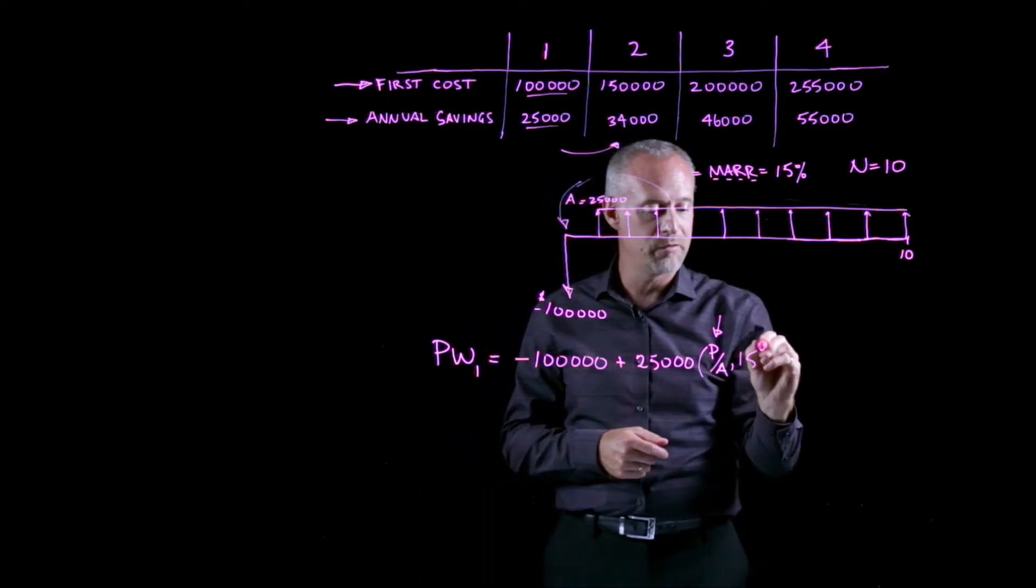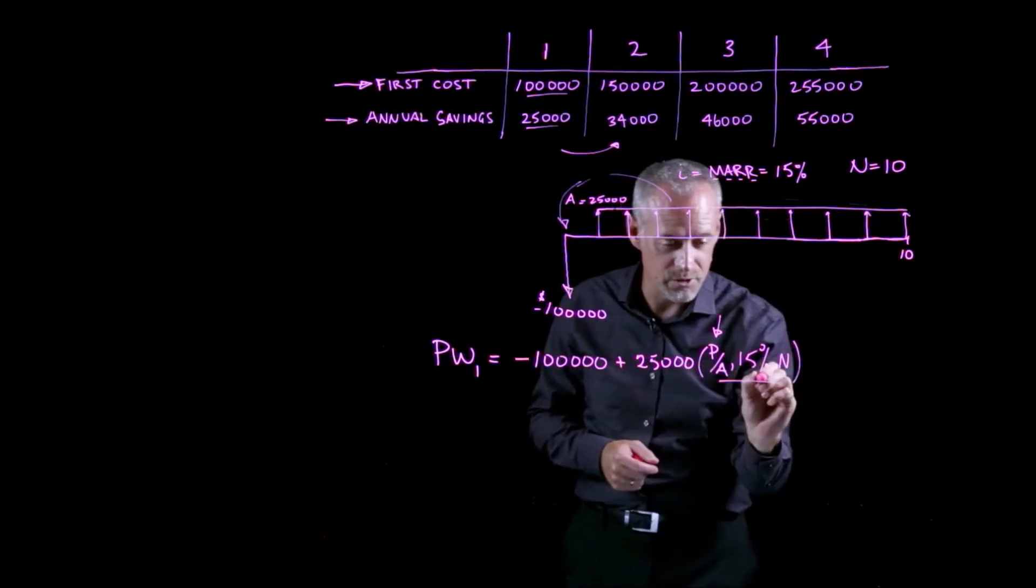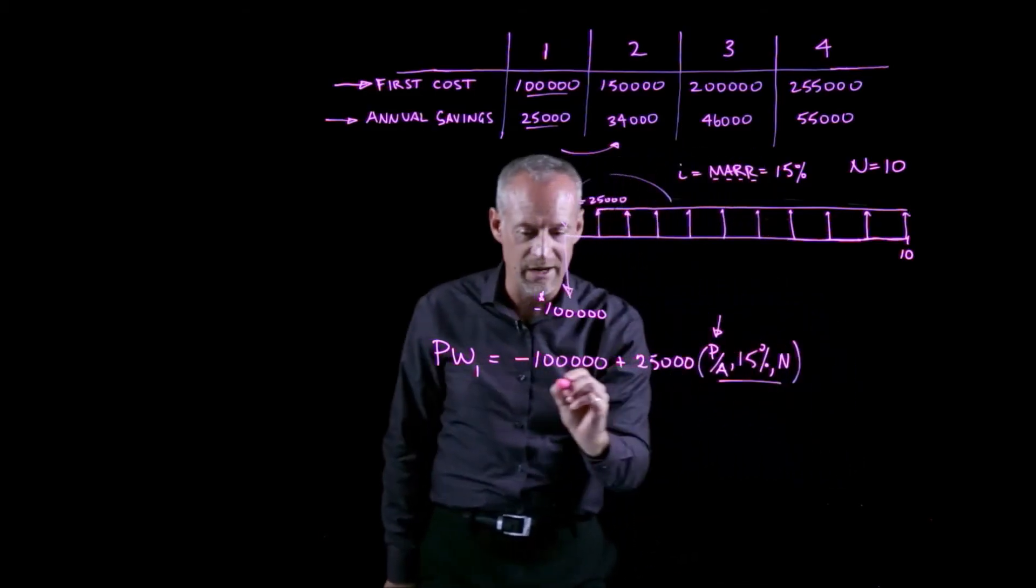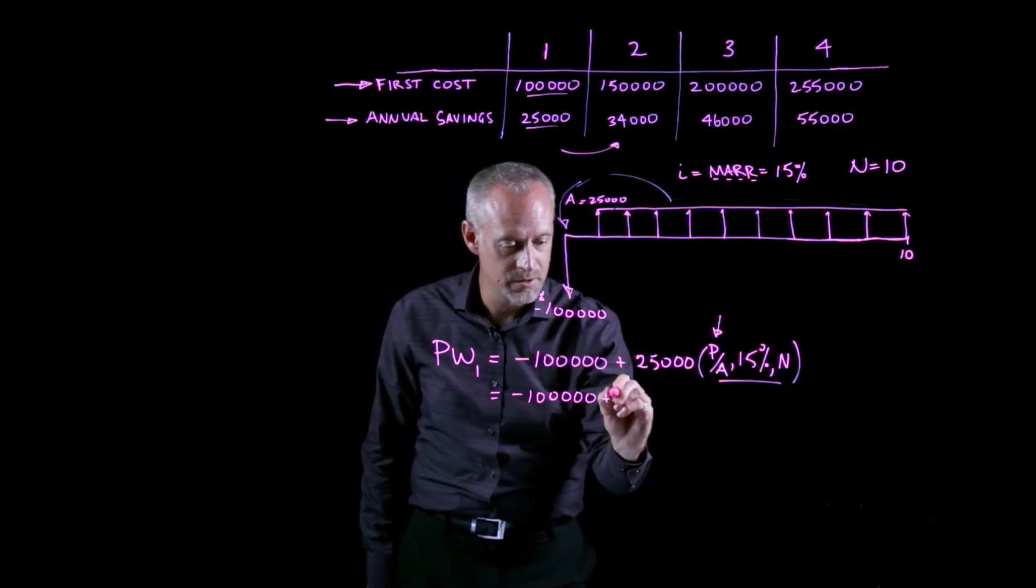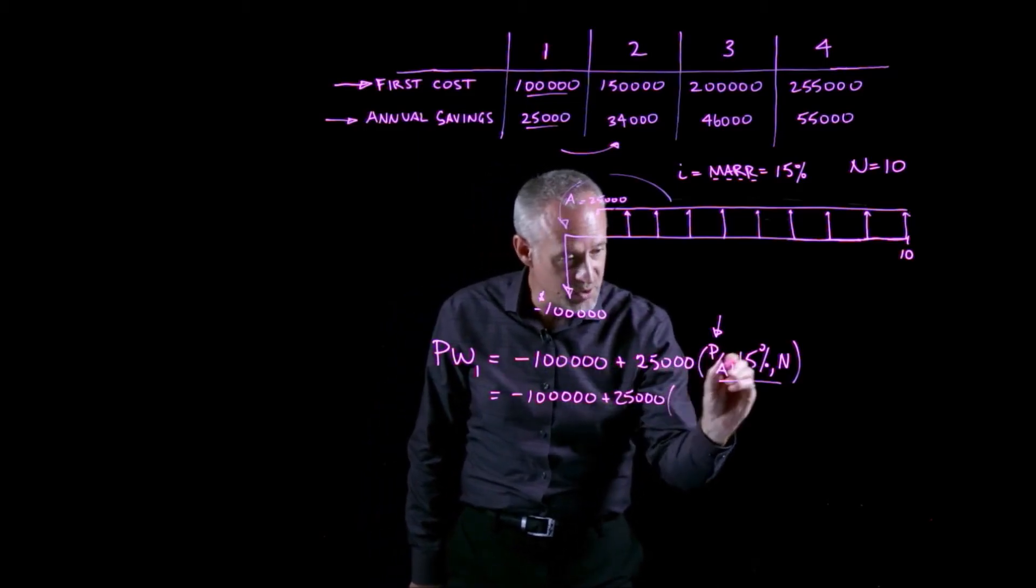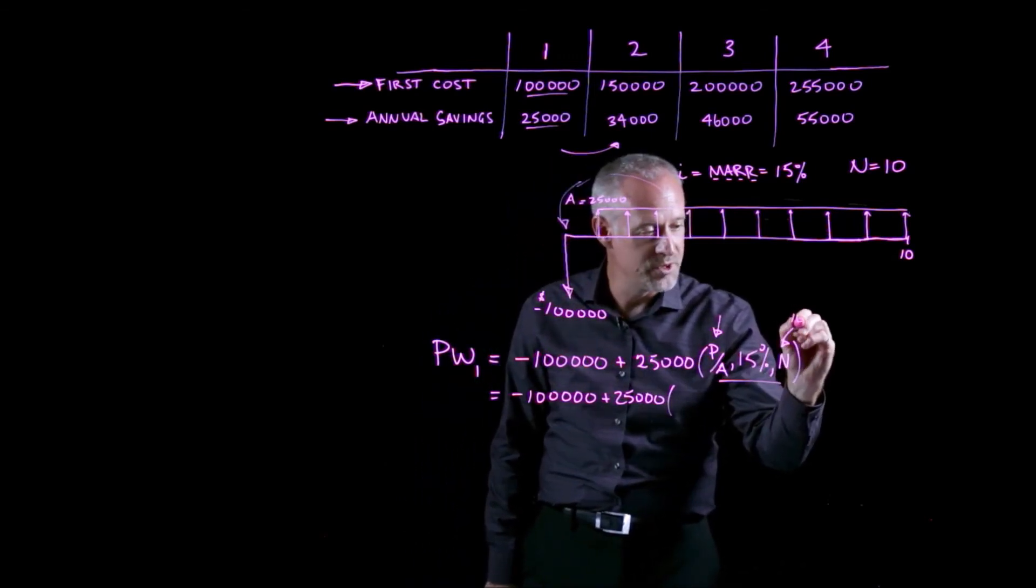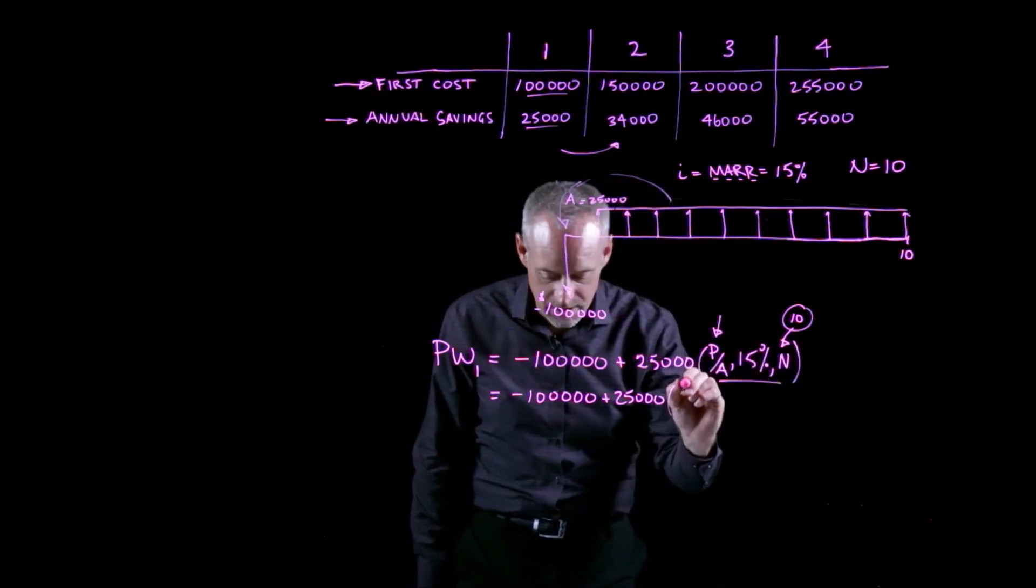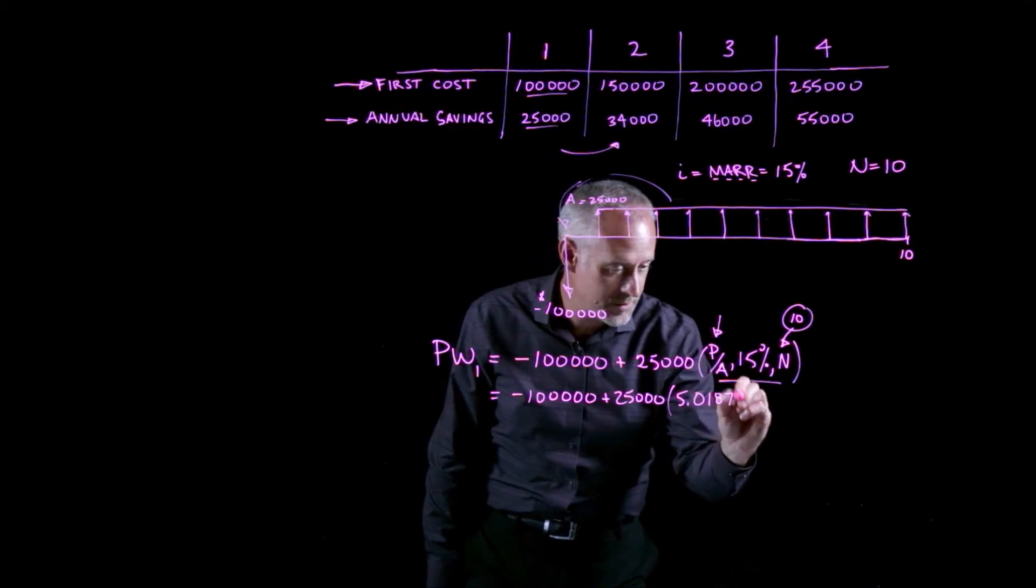So I use the P given A factor, and in this case, I'll do it for 15% and 10 years. So the compound interest factor that I'll use, I can find this in an interest table at the back of my textbook. It's 25,000 times the P given A factor in the 15% interest table for N equal to 10. I should have written that in there, is 5.0187.